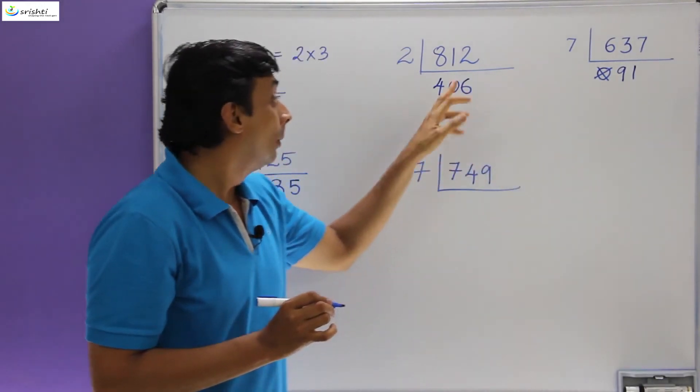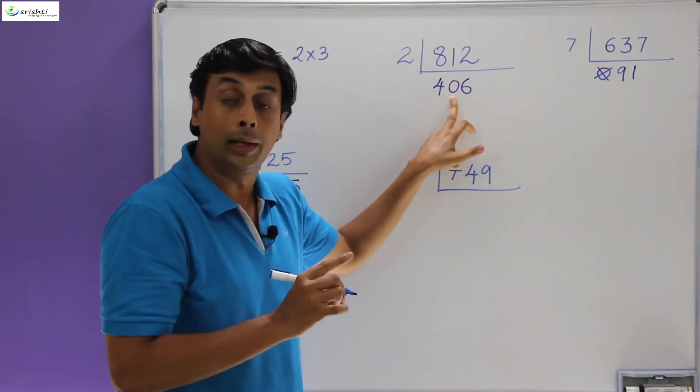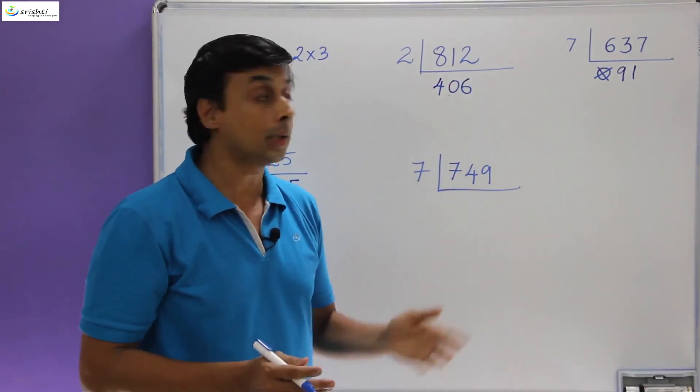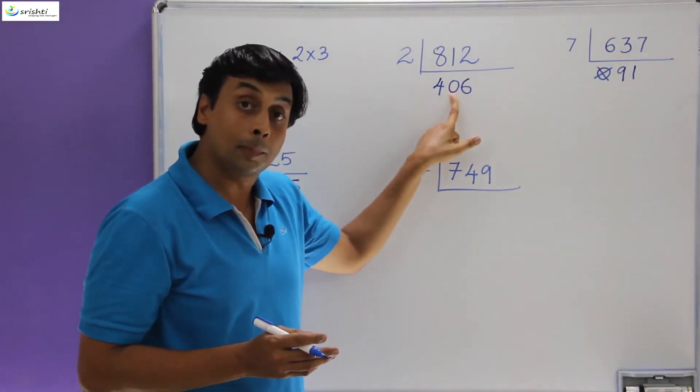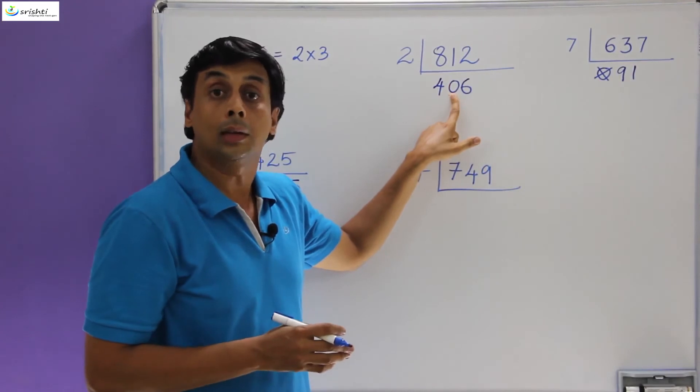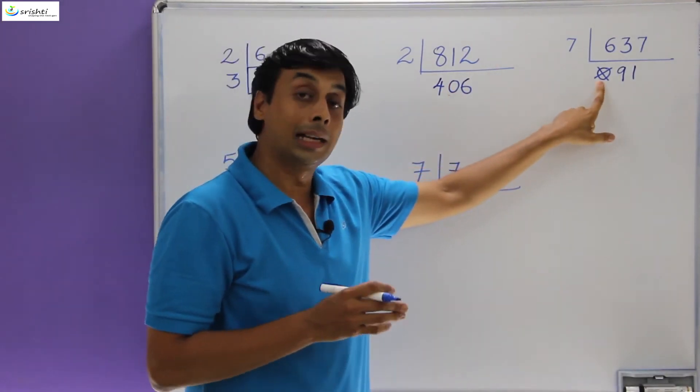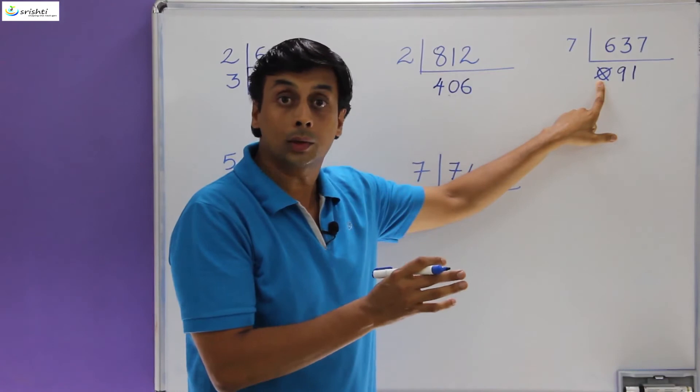But omitting a 0 in between is absolutely not acceptable because this particular 0 has a place value which plays an important role. This 0 does not have a place value with significance because there are no digits preceding it.